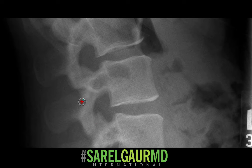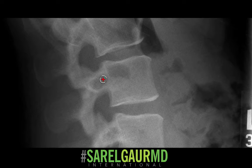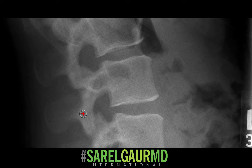As I move backwards, I then have the lamina of the same level — the L3 level — and then I get the spinous process of the L3 level.